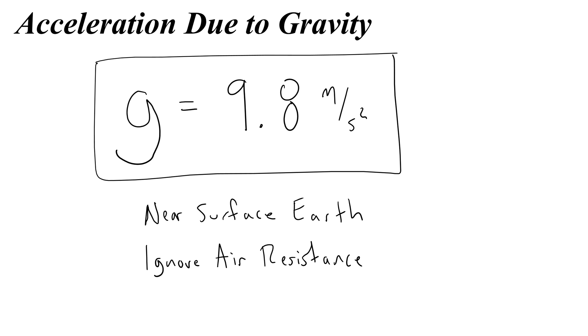Near the surface of the earth, and if we ignore air resistance, that acceleration due to gravity is 9.8 meters per second squared. We like to say that this number is kind of special and we use the letter lowercase g to represent it.